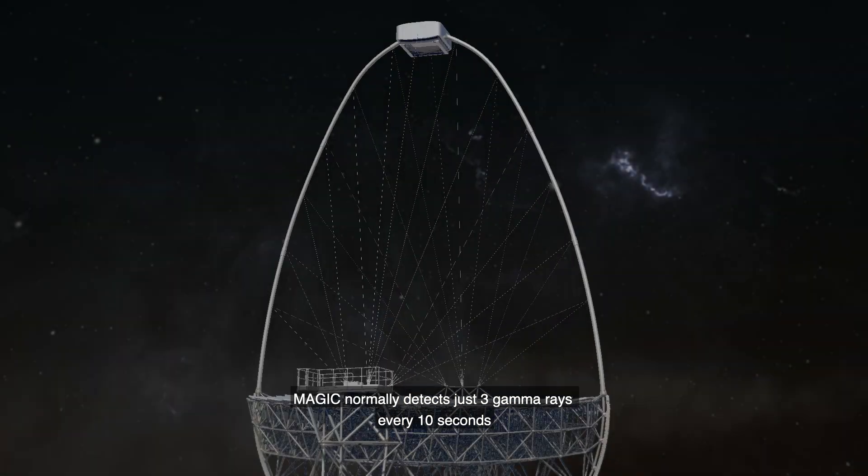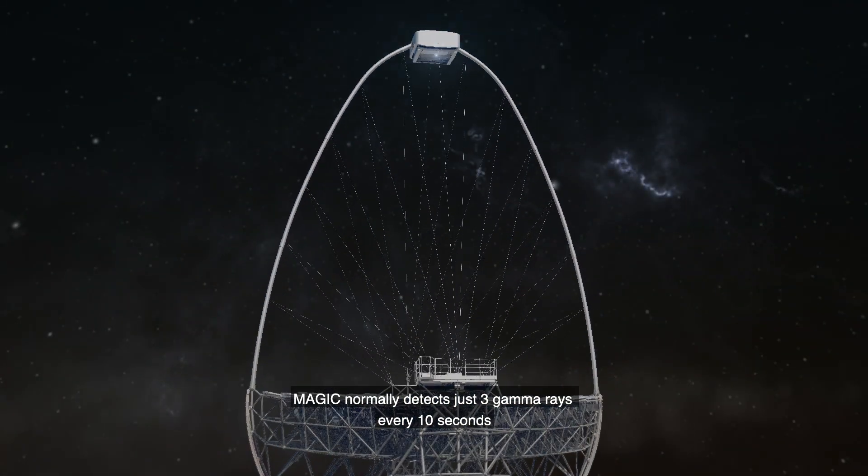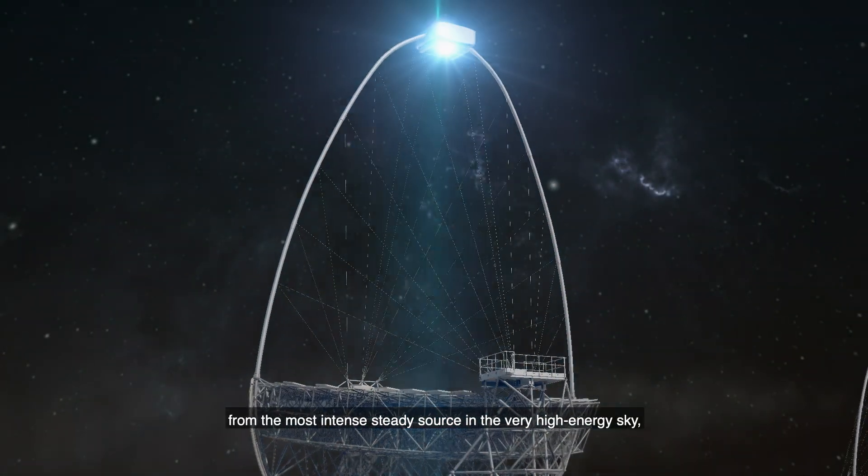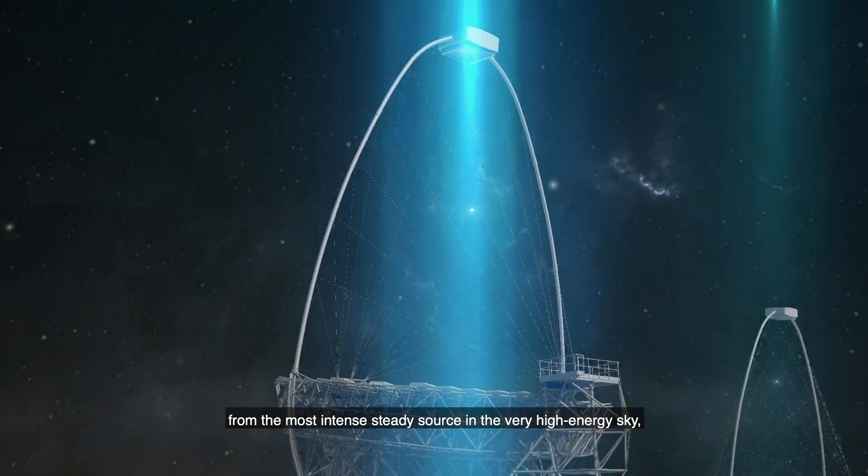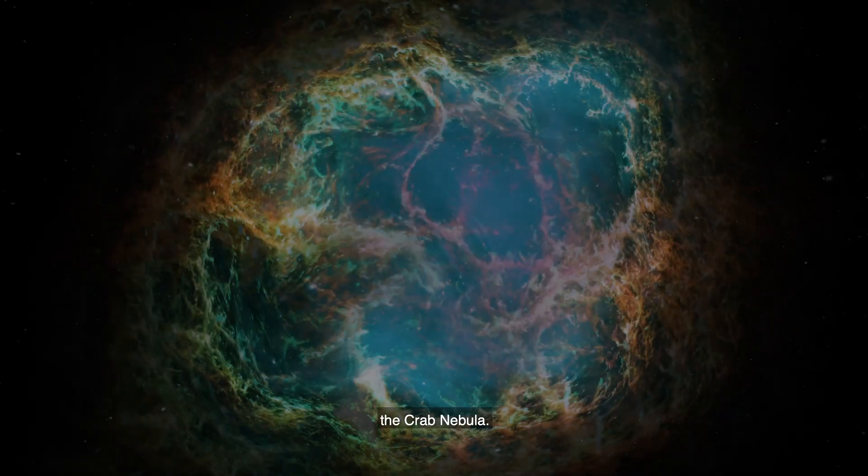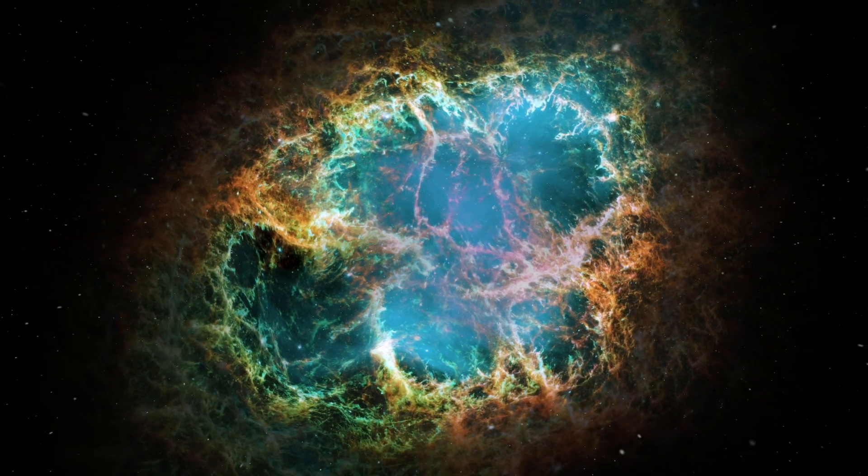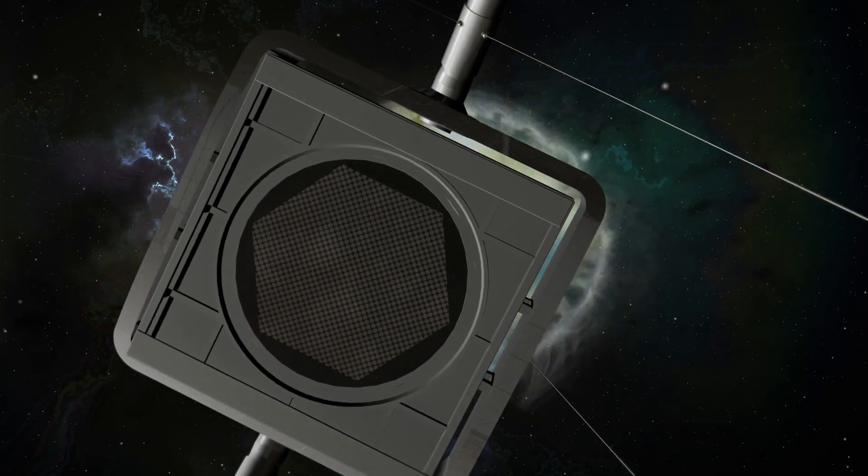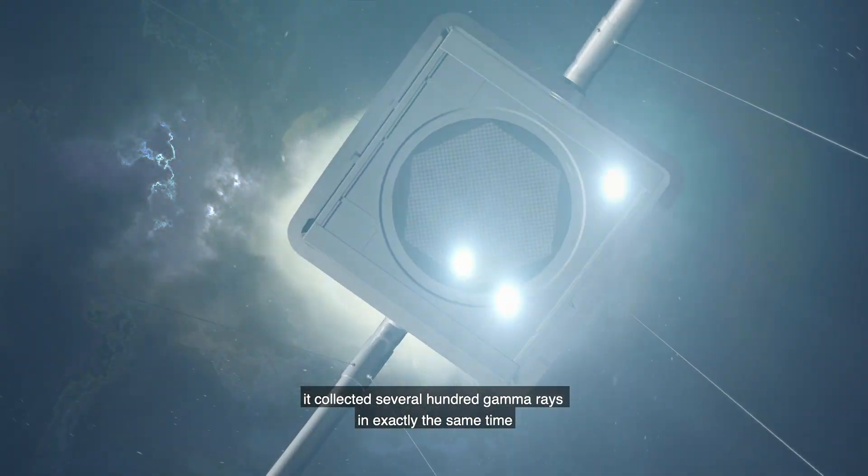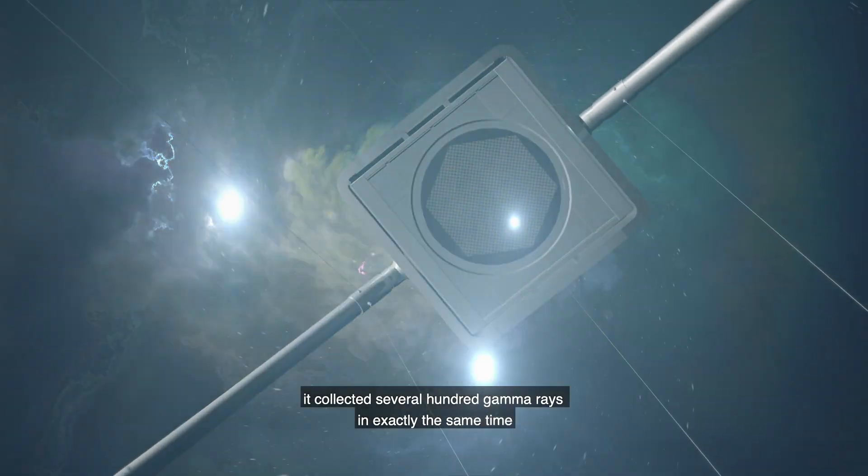MAGIC normally detects just three gamma rays every 10 seconds from the most intense steady source in the very high-energy sky, the Crab Nebula. But when MAGIC took aim at the new gamma-ray burst, it collected several hundred gamma rays in exactly the same time.